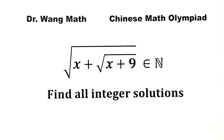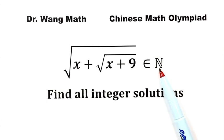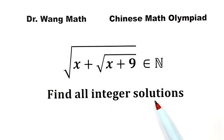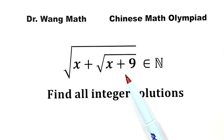In this video, we can solve a question from the Chinese Math Olympiad. Given the square root of x plus the square root of x plus 9 is an element of the natural numbers, find all integer solutions. This can be confusing at first glance, and it's unclear how to approach it since this is not an equation.